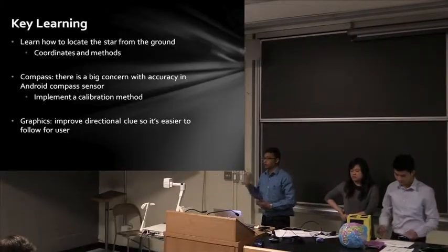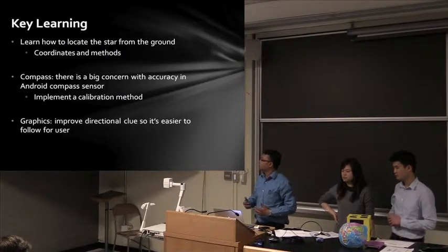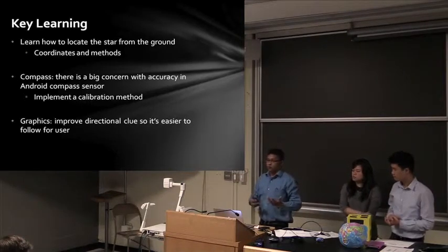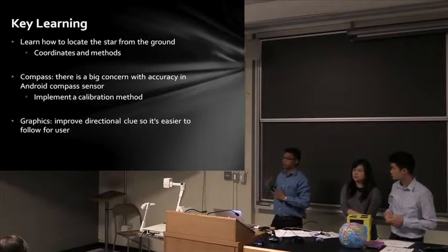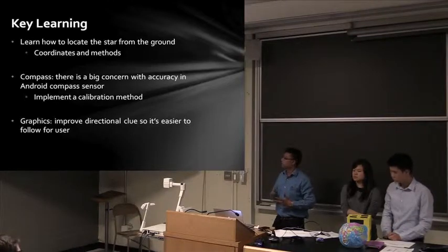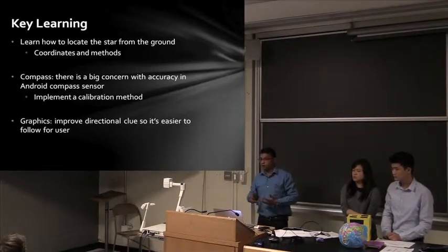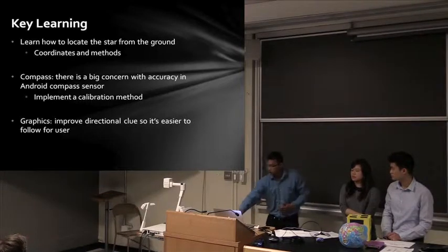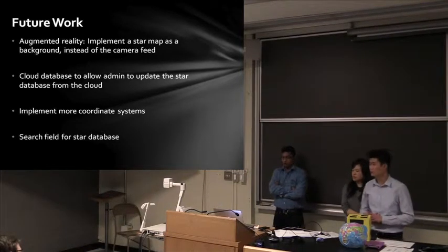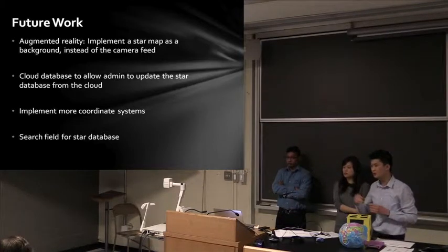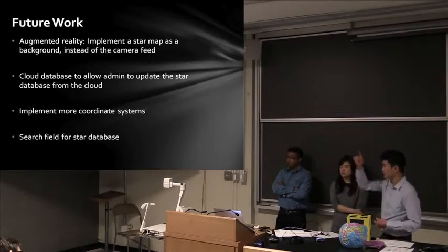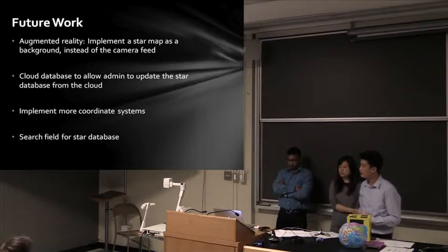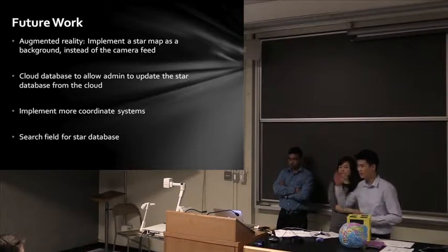During the process of making this app we learned a few things — for example, how to calculate the coordinates of a star and locate it. Compass accuracy was a big concern, so we implemented a calibration method. Right now we use OpenGL for graphics, but for future work we want to add augmented reality so instead of just a camera feed the operator can see surrounding stars in that area. We also want to implement a cloud database — right now the database is on the phone, but a cloud database could be updated by an admin, allowing us to keep adding stars indefinitely.